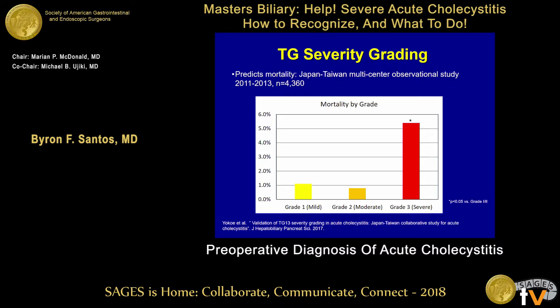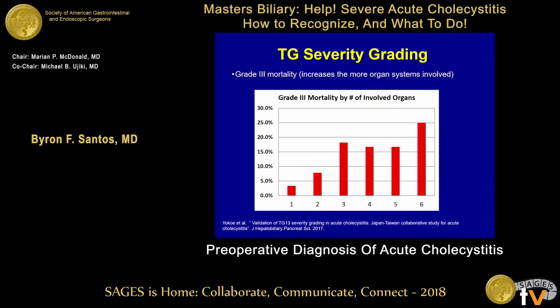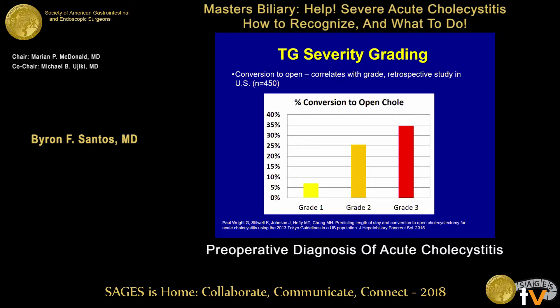Looking at how these severity gradings actually perform, a multicenter study in Japan and Taiwan of almost 5,000 patients showed a clear worsening mortality with severity — grade 3 has about a 5.5% mortality. The guidelines make sense from a mortality prediction standpoint. For grade 3 patients, the higher the number of organ systems involved, the higher the mortality, with some groups showing up to 25% mortality. In a retrospective U.S. study, conversion to open surgery also correlated very nicely with the grades of severity.